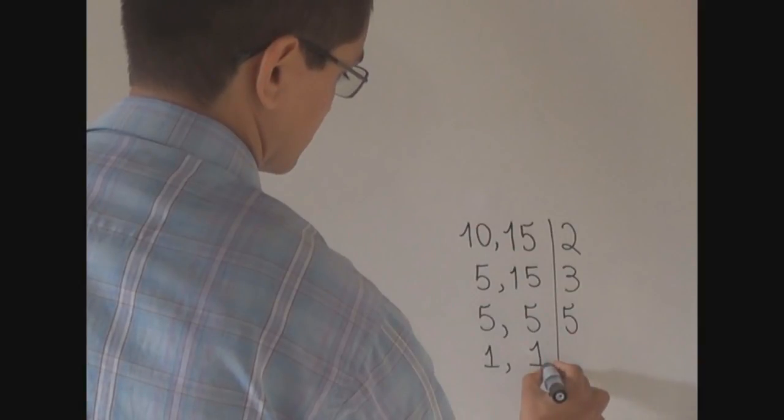This part of the algorithm is over. Why? Because whenever we get the number 1 at the bottom of the left columns, this part of the algorithm is over. So, what do we do now?